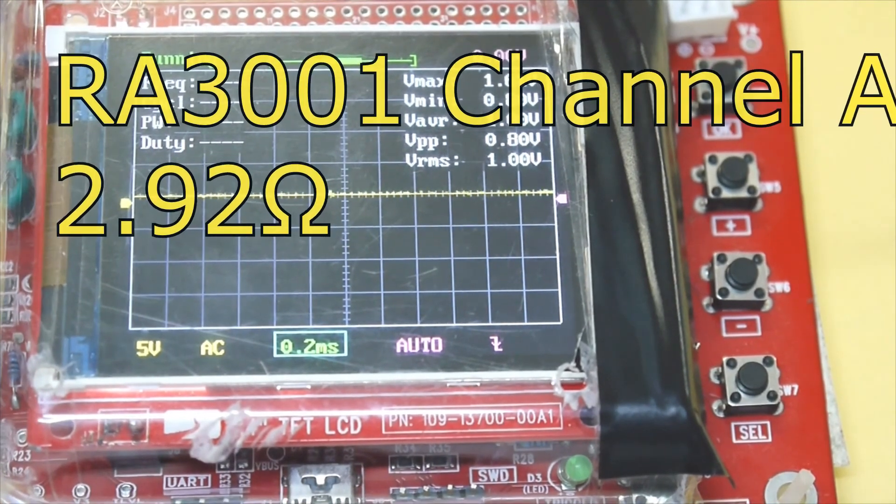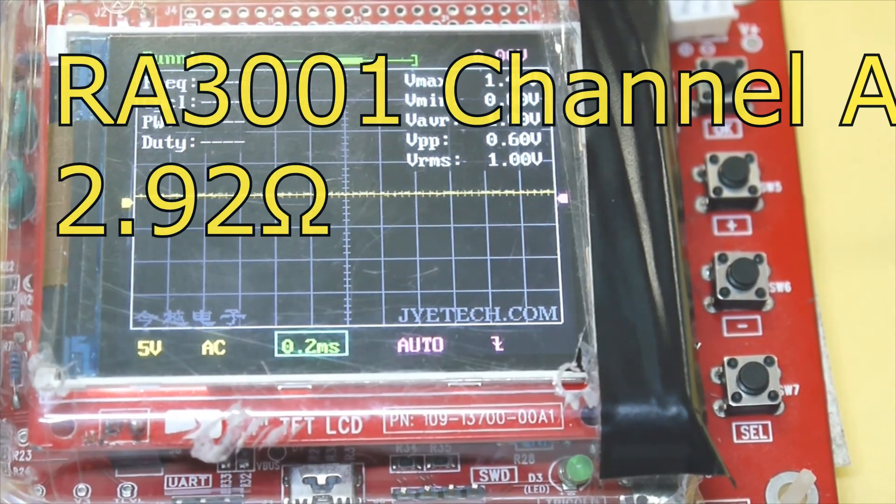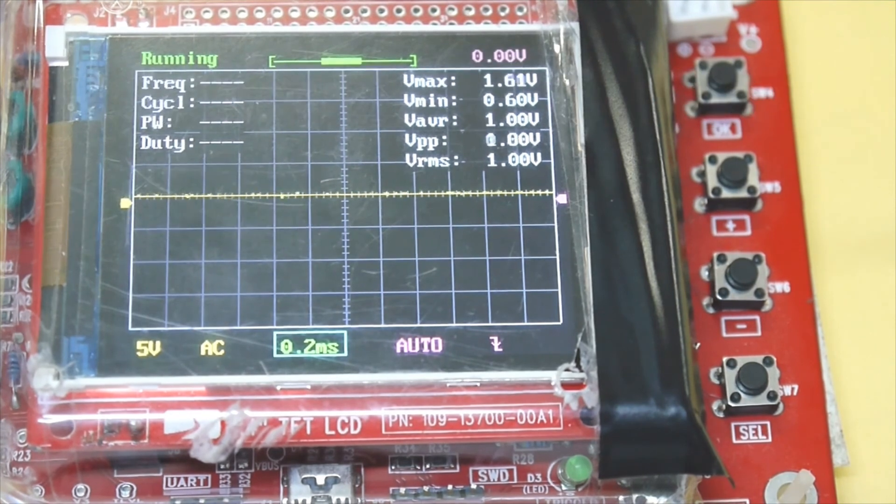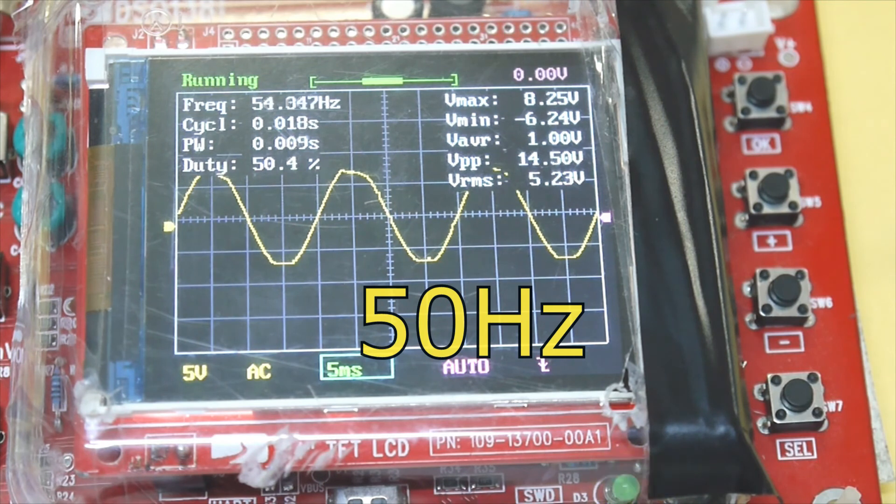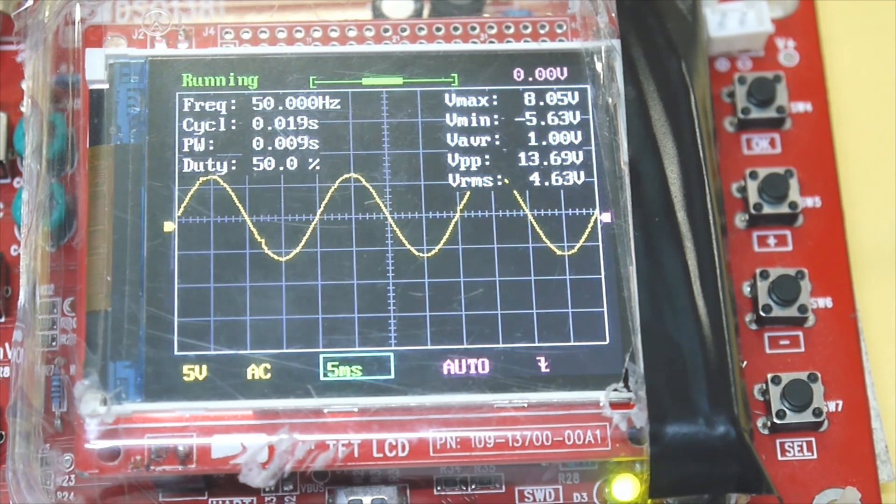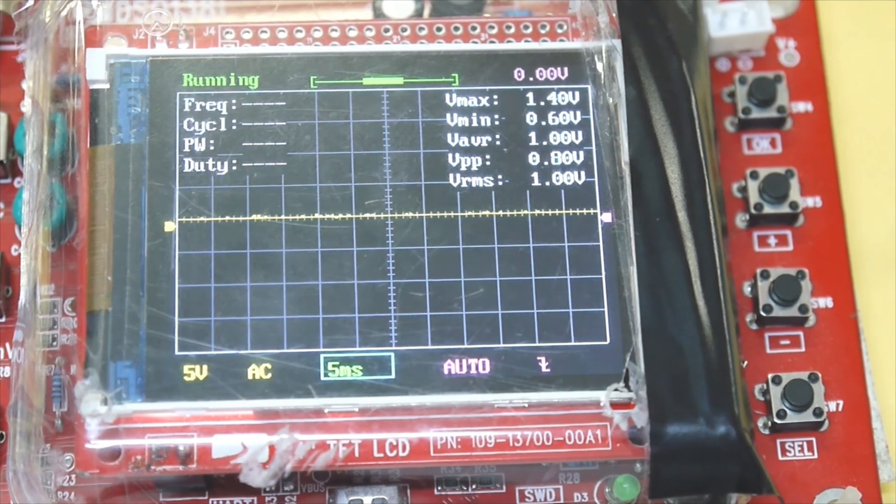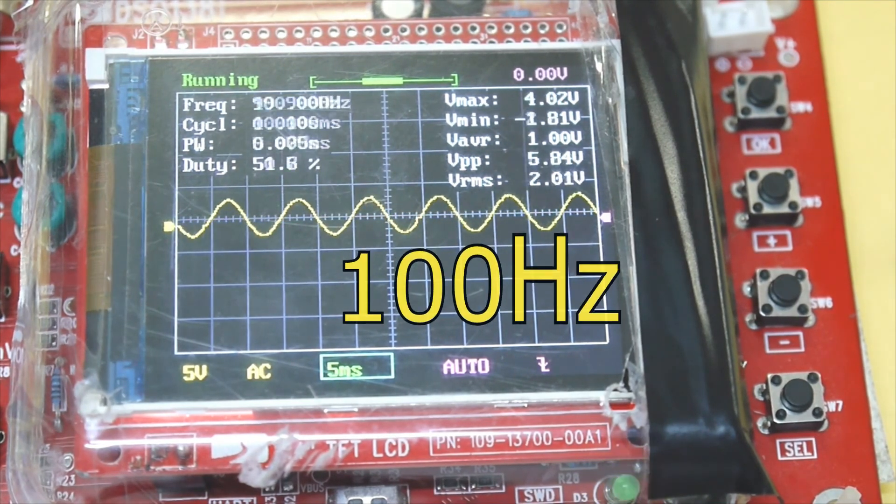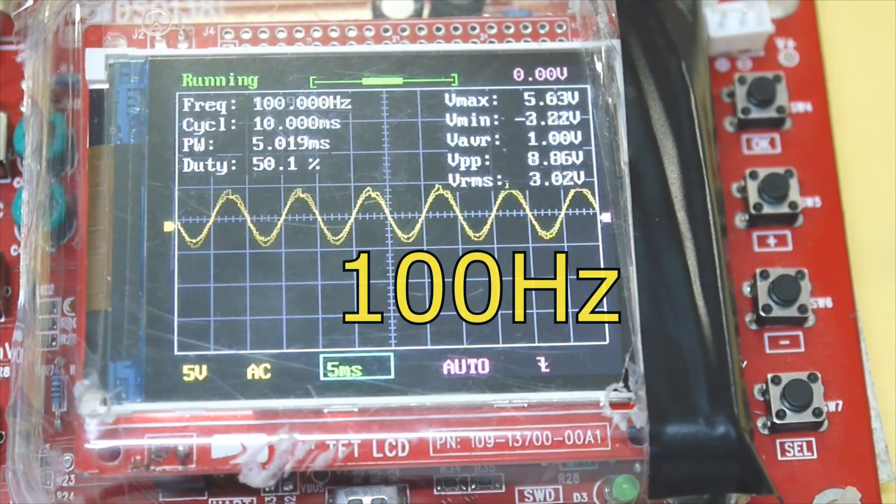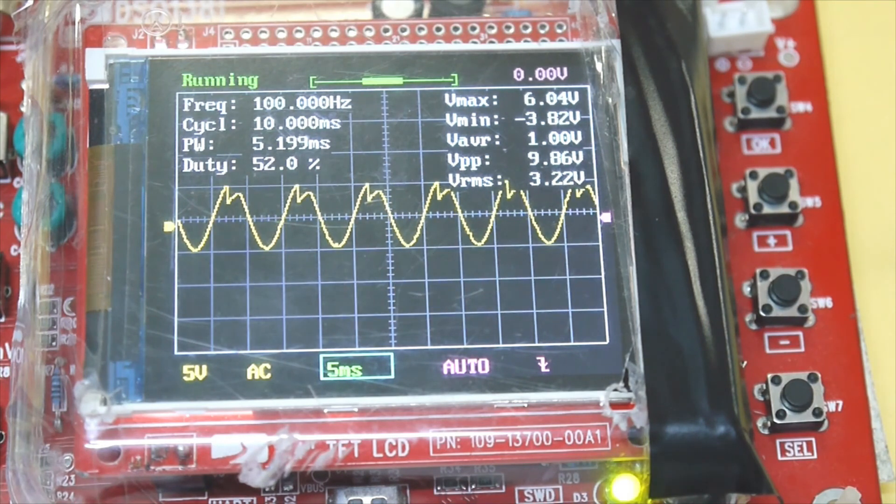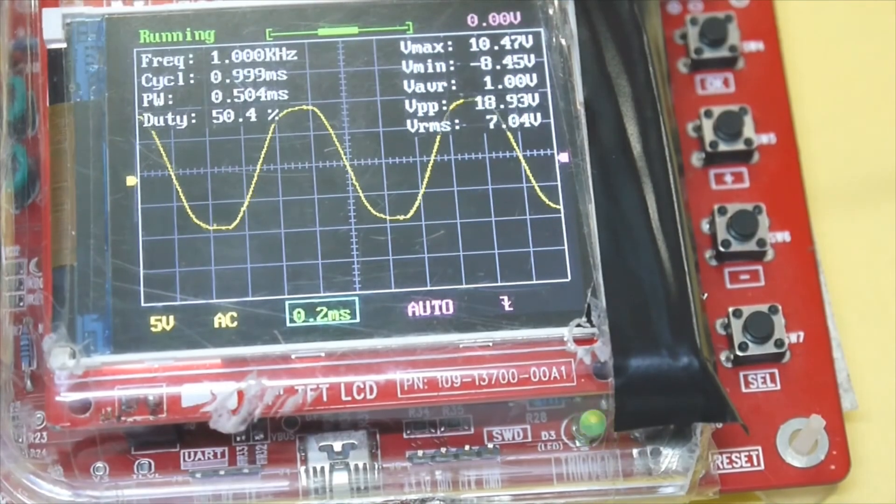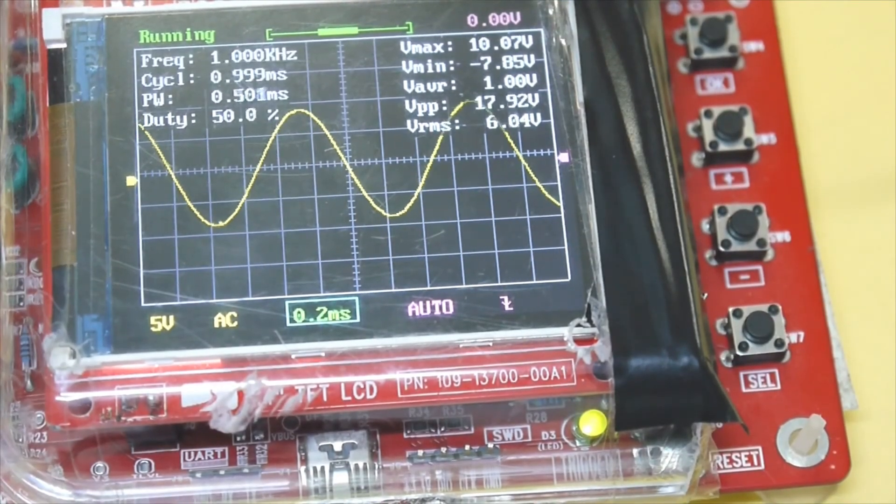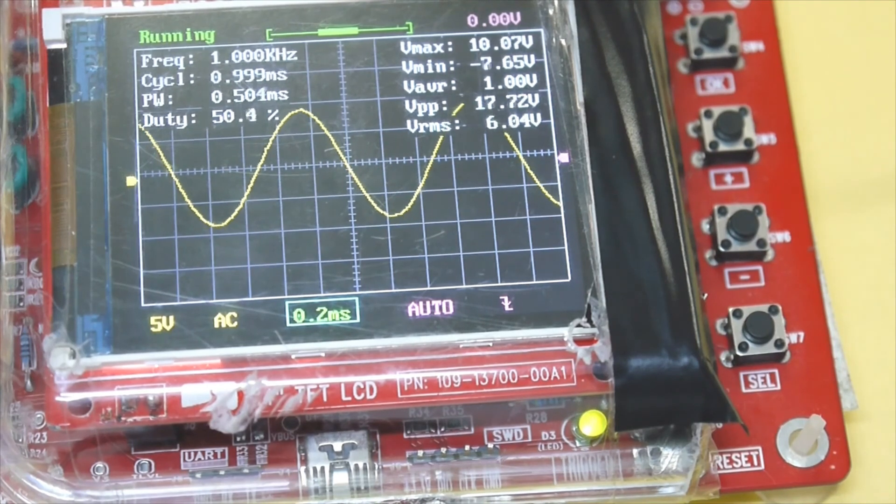Let's go back to channel one, 2.92 ohms, first test. 50 Hz. It's limiting around 5 volts. And finally, 1000 Hz. Yes, that's the limit. 6.6 volts.